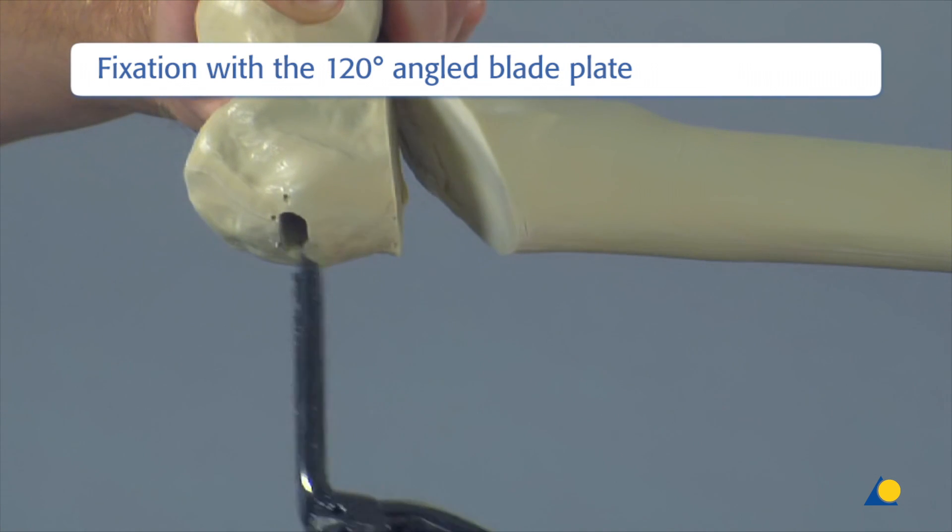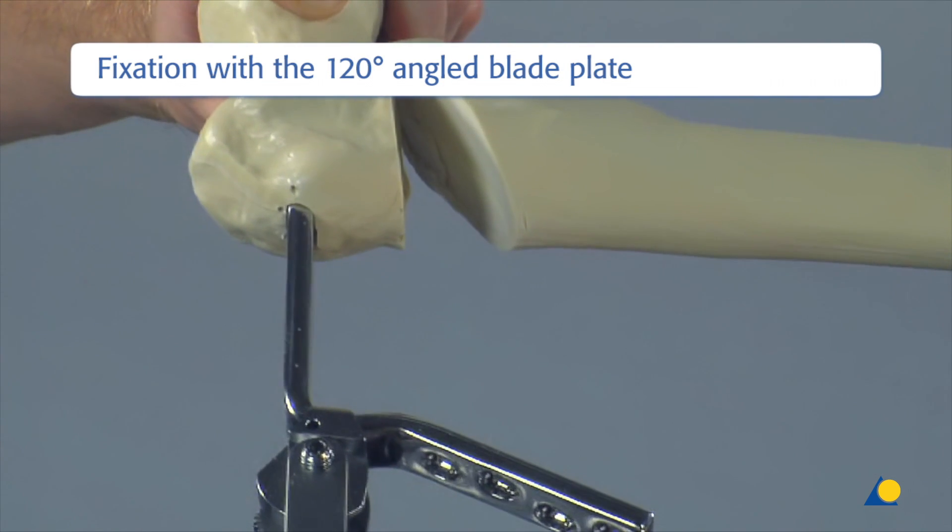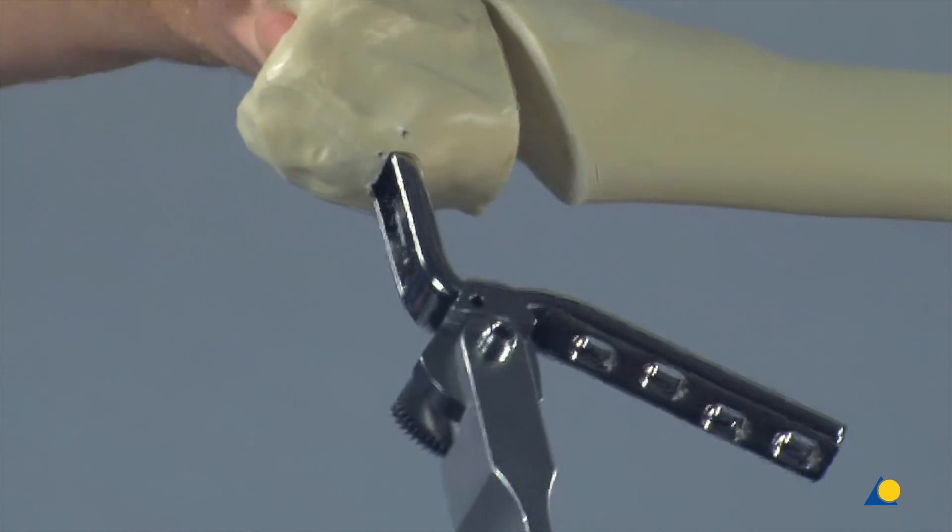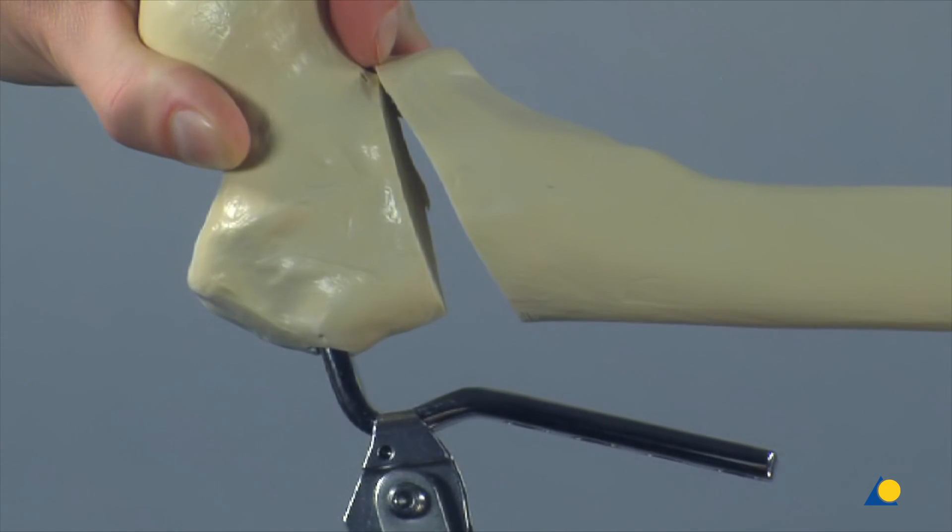After the osteotomised bone wedge has been removed, the 120 degree angled blade plate is inserted, leaving it laterally one centimetre proud of the bone.